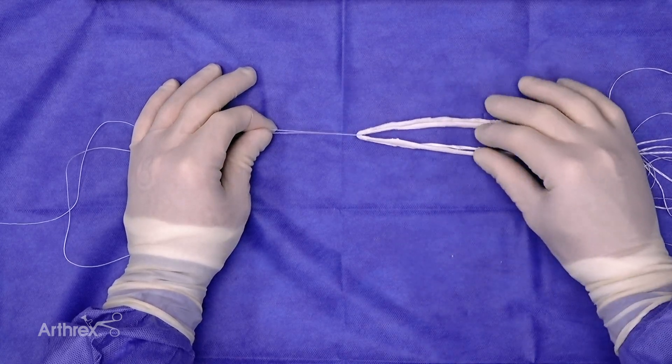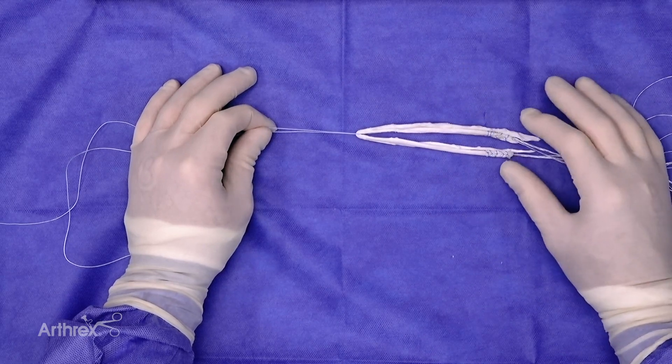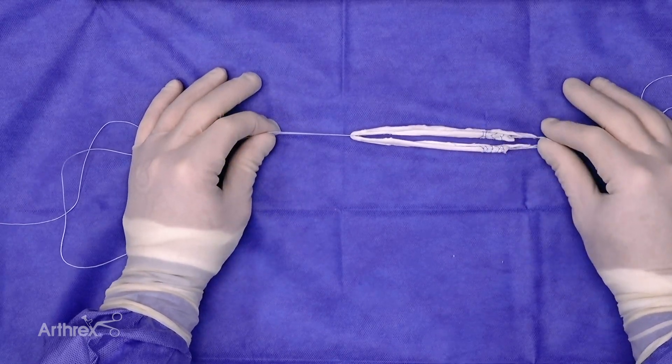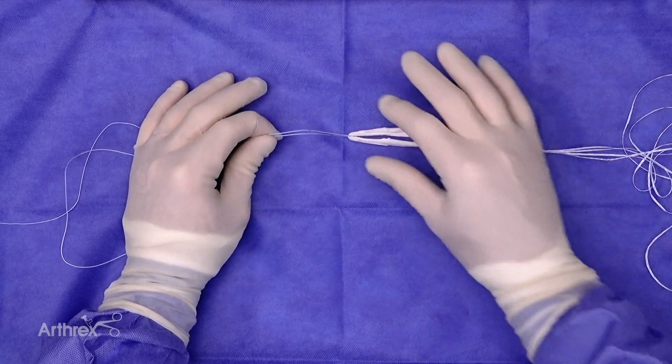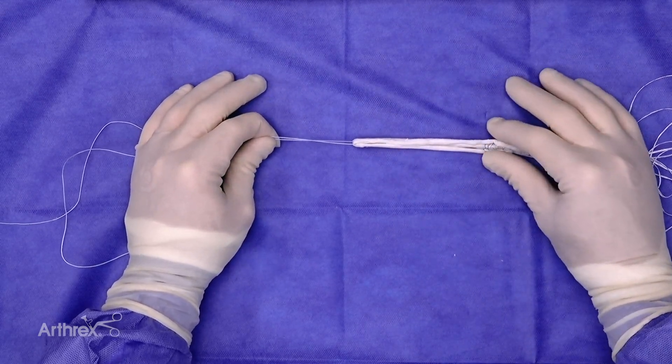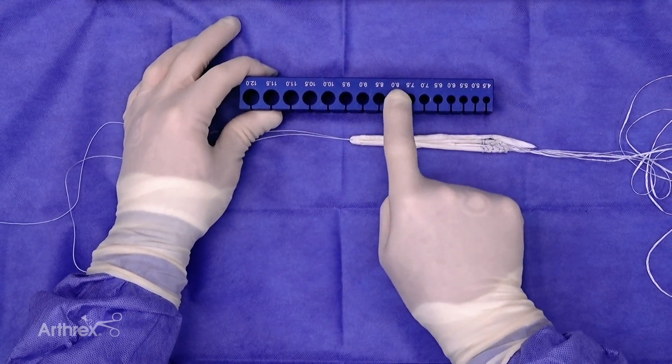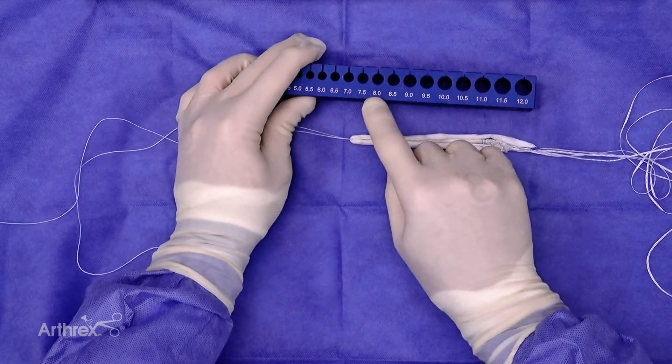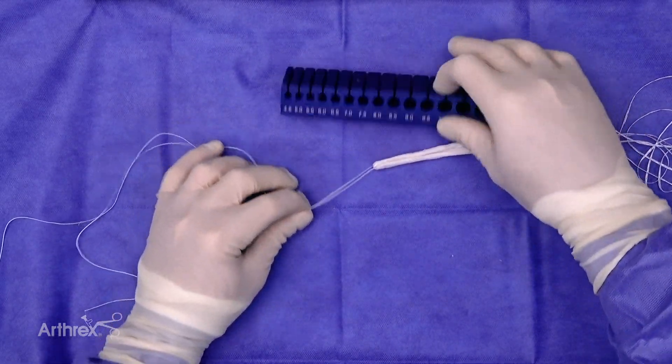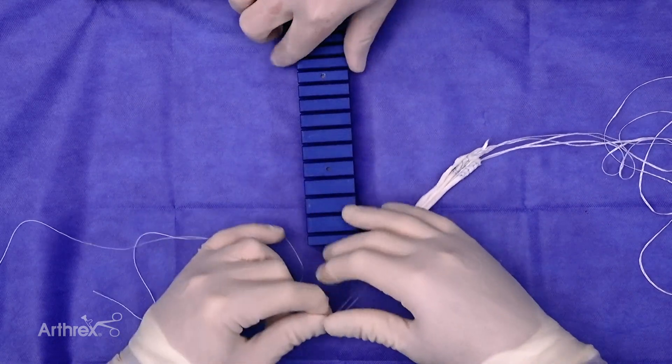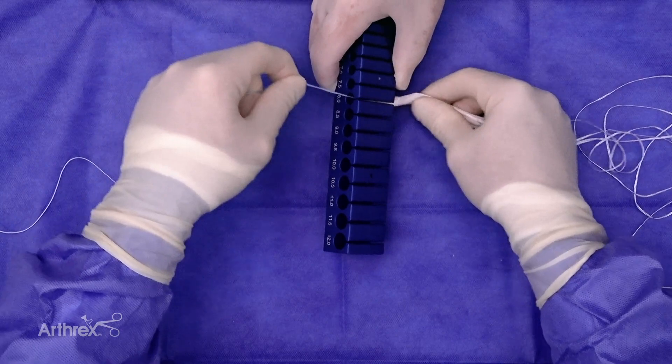Today we're presenting a technique in which a quadruple hamstring autograft harvest is obtained with the goal of performing an ACL reconstruction with hamstring autograft. Not infrequently, intraoperatively, it is encountered where the hamstring quadruple autograft is not as thick as is necessary. We know that an 8mm diameter is necessary for an individual to have a low re-rupture rate. However, at times, the quadruple autograft is not as thick as you would want in diameter.